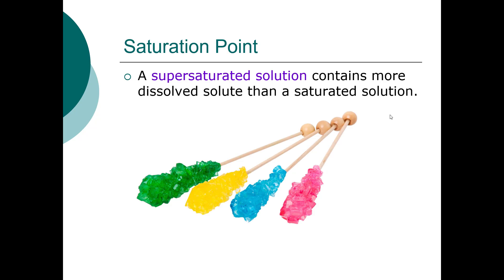There are also supersaturated solutions, which you can make by manipulating temperature and pressure. If you've made rock candy, you've made a supersaturated solution: you add as much solute as possible, heat it up and add more, heat and add more again, then let it cool. As long as there is no seed crystal in the solution, everything stays dissolved evenly in that supersaturated state.